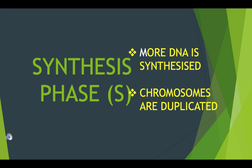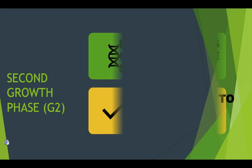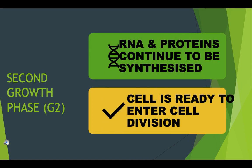The S phase of the cell cycle occurs during interphase and is responsible for the synthesis or replication of DNA. In this way, the genetic material of a cell is doubled before it enters cell division, allowing there to be enough DNA to be split into daughter cells.